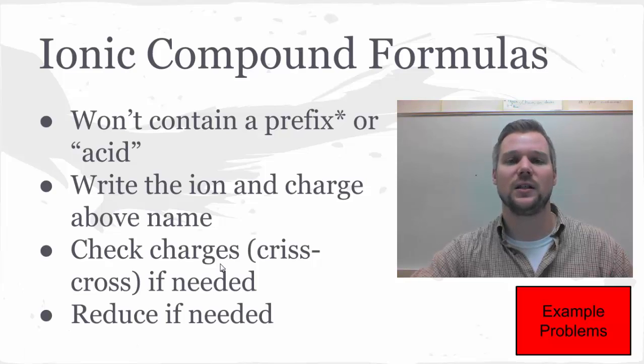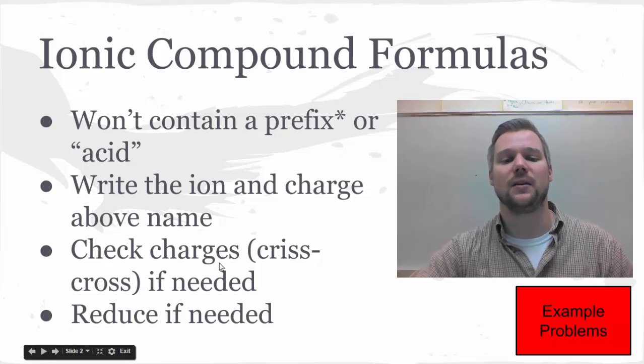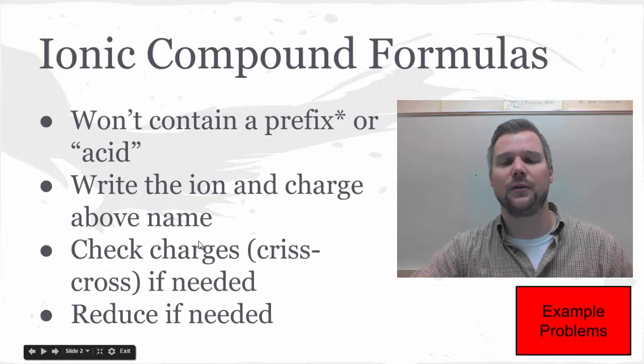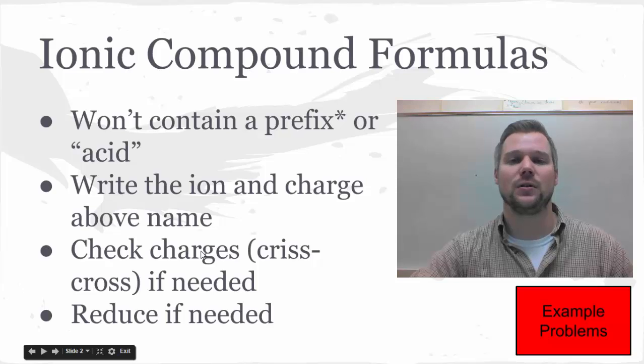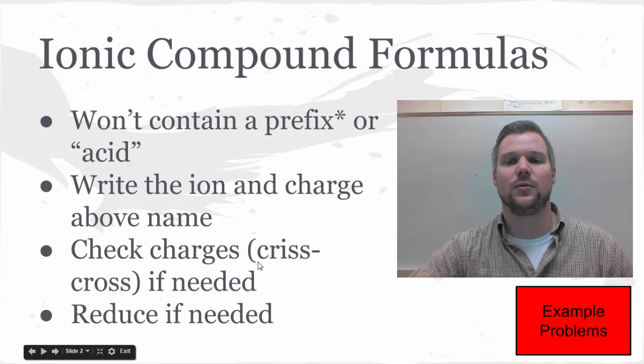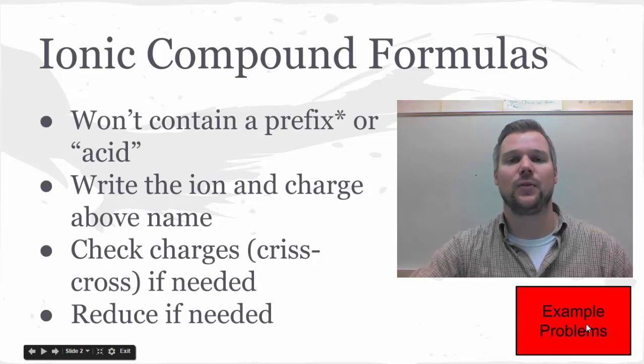The crisscrossing charge on the ion becomes the subscript inside the formula. If you need to, you're going to reduce. If both subscripts happen to be twos, you would just drop them. Or if one was a two and the other were a four, you would reduce the two down to a one and the four down to a two if that's needed. I have some ionic specific formula examples right here.